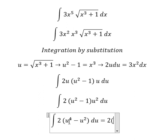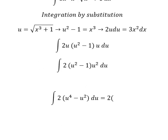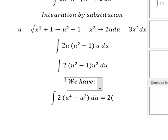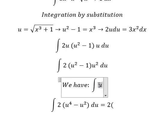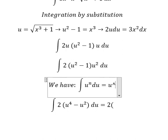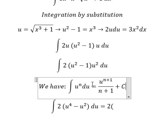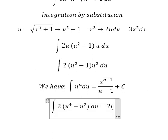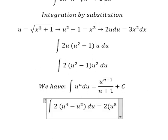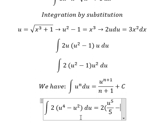We have the integration formula here. For u to the power of 4, we add 1 to get 5 in the denominator. Similar process for the second term with u².